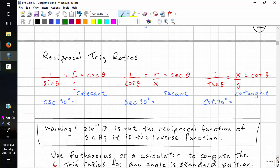We're doing trig functions. We should also know the reciprocal trig ratios. 1 over sine theta is r over y, that's cosecant theta. 1 over cos theta is r over x, that's secant theta. 1 over tan theta equals x over y, that's cotangent theta.